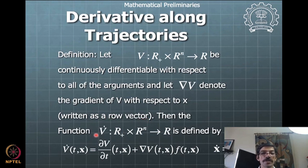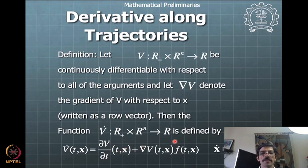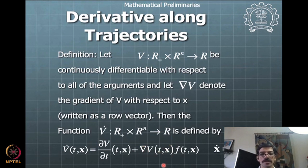The function v̇ is defined as follows: since v is a function of time and the state vector, differentiation will have a time part plus a vector part multiplied by ∂v/∂x times dx/dt. This gives the complete derivative: v̇ = ∂v/∂t + (∂v/∂x)(dx/dt), where ∂v/∂x is the gradient ∇v.